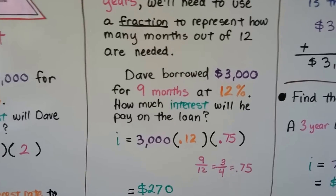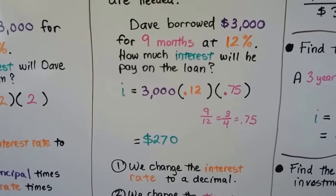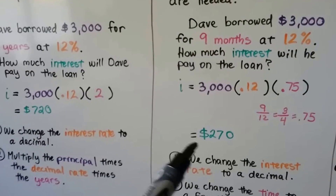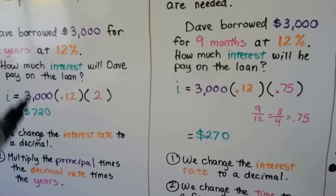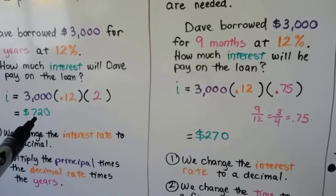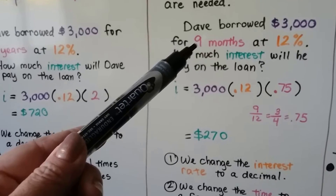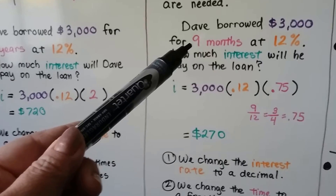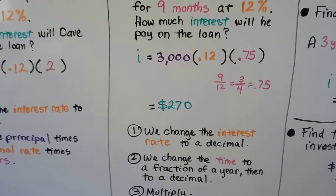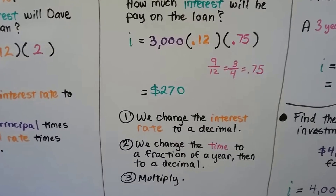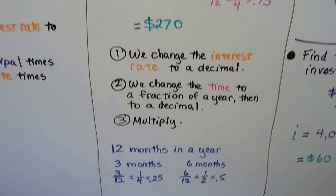So 3,000 times 0.12 times 0.75 equals $270. Look at the difference — if he took two years he'd pay $720, but if the loan was only nine months, he'd only pay $270 in interest. That's almost $450 in savings! We change the interest rate to a decimal, change the time to a fraction of a year, then to a decimal, then multiply.